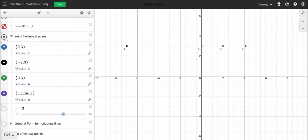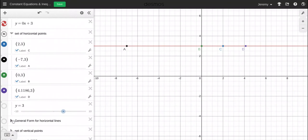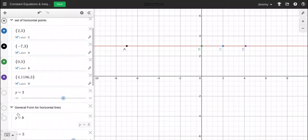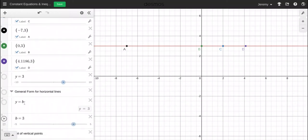Let me keep them on, actually. We have a general form for horizontal lines. All horizontal lines can be put in the form of y equals b.